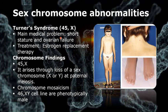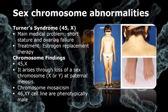Ovarian failure commences during the second half of intrauterine life and leads to primary amenorrhea — absence of menstruation — and infertility. Treatment involves estrogen replacement therapy, which should be initiated at adolescence for the development of secondary sexual characteristics and prevention of osteoporosis.